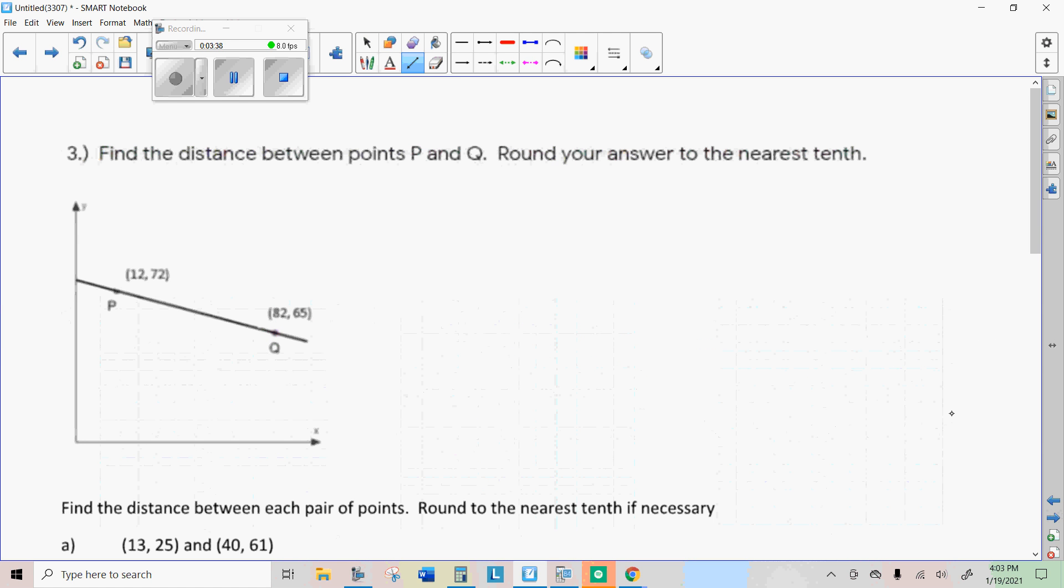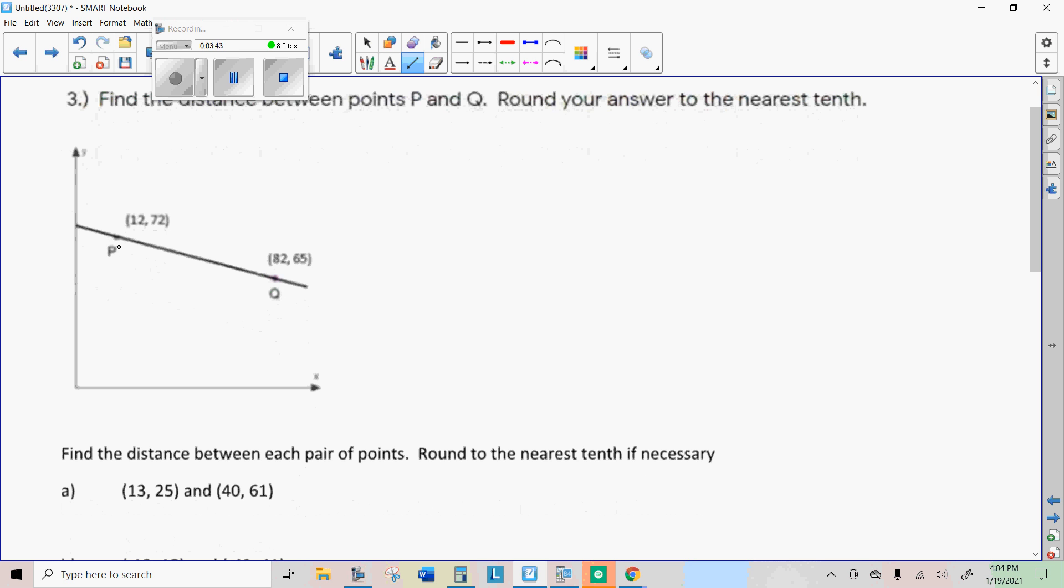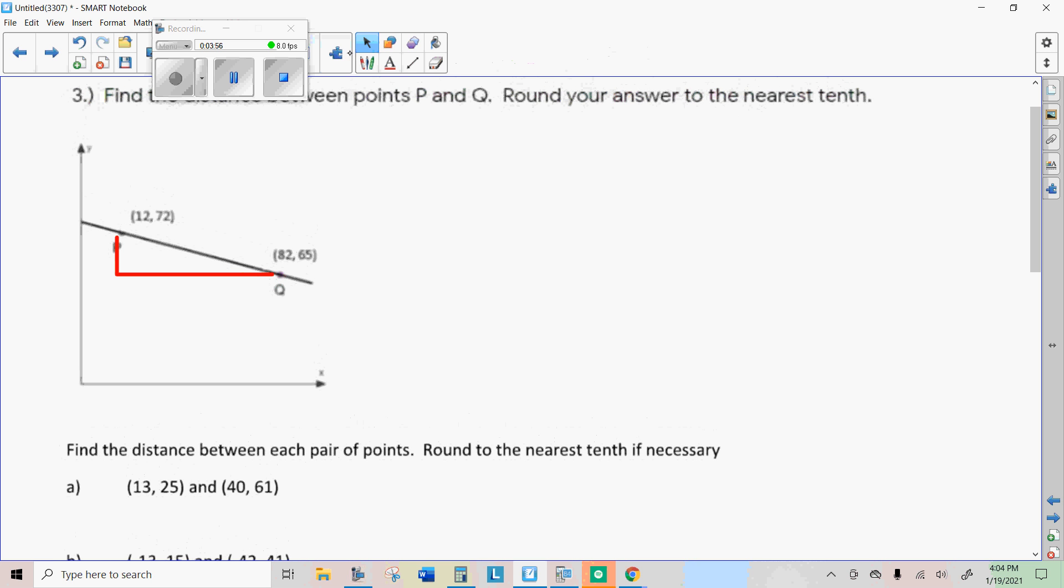On this one, we are just going to have to remember what the formula is when we do that. Because these numbers, it's just too big. But remember, we're basically trying to find a right triangle like that. Now, the way you get this length right here is you subtract the x coordinates. So, I would do 82 minus 12. And the way you get this length right here is you subtract the y coordinates. So, that would be 72 minus 65.